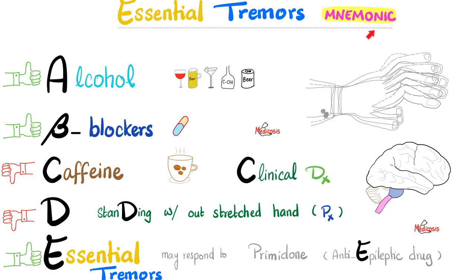Now to the mnemonic — let's go. For essential tremors, you write down A, B, C, D, and E, then two thumbs up followed by two thumbs down. And before we go, let's end on a positive note and add a thumbs up.